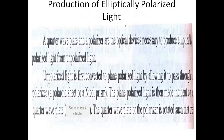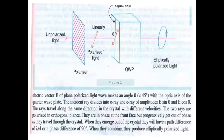Let's understand the process of producing elliptically polarized light through this demo. In this diagram, you can see that unpolarized light is first converted into polarized light with the help of a polarizer — that is a Nicol prism. The plane polarized light then enters the quarter wave plate, and the angle at this point with the optical axis is other than 45 degrees.